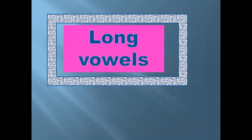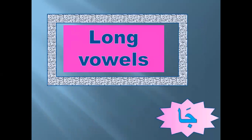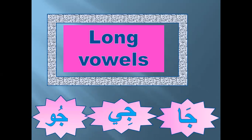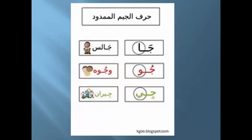Long vowels — long vowels means the letter is followed by a madd letter. Jim with fatha followed by alif madd: 'Jaa'. Please write: Jaa. Jim with kasra followed by ya madd: 'Jii'. Jim with damma followed by waw madd: 'Juu'. Please write: Juu.